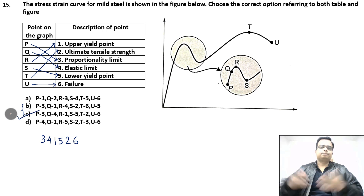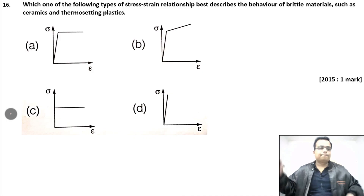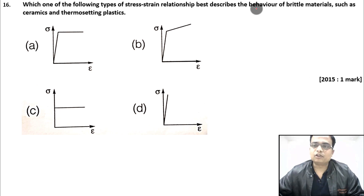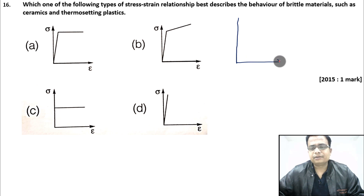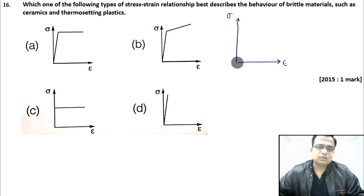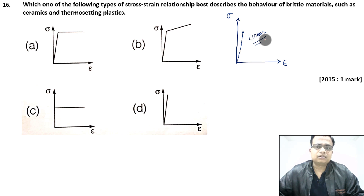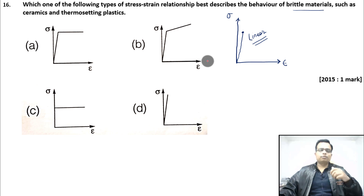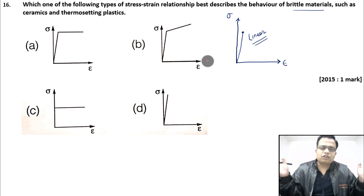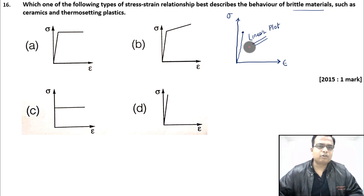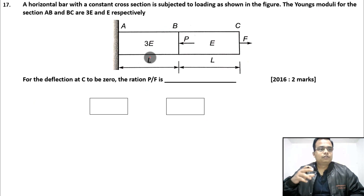Which stress-strain relationship best describes brittle materials like ceramics and thermosetting plastics? For a brittle material in a tensile test, there is very little or no deformation before fracture — giving a linear stress-strain plot. The same applies to concrete. Option D, showing a linear relationship without a yield region, is correct.